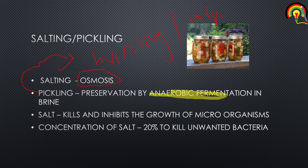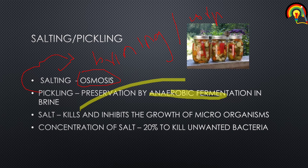Pickling gives food a salty or soft taste. Table salt, which consists primarily of sodium chloride, is the most important ingredient for curing food and is used in relatively large quantities. Salt kills and inhibits the growth of microorganisms. The concentration of salt required to kill unwanted bacteria ranges around 20 percent.